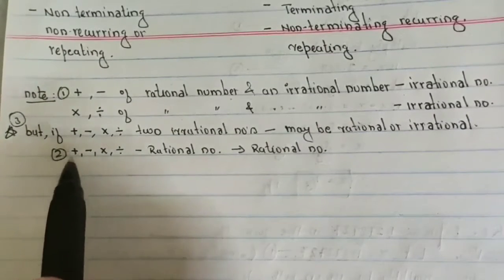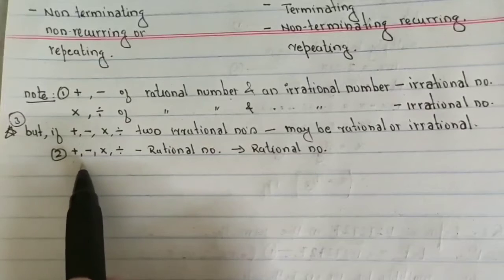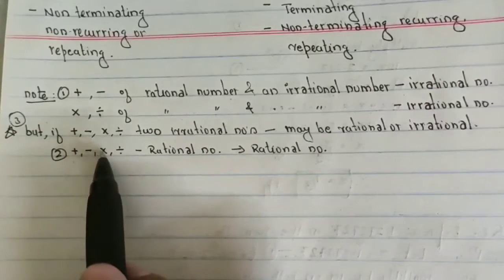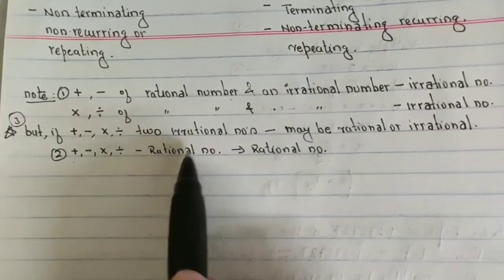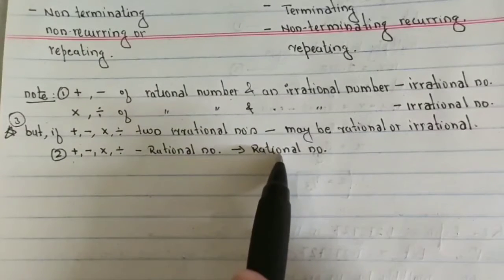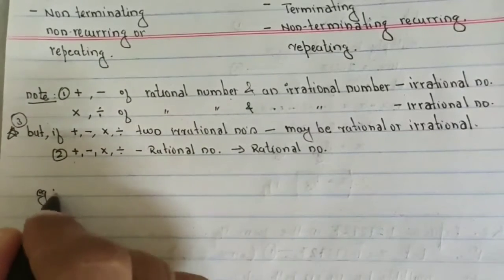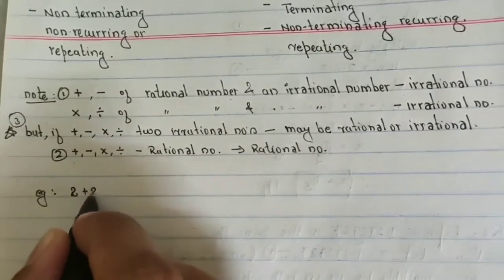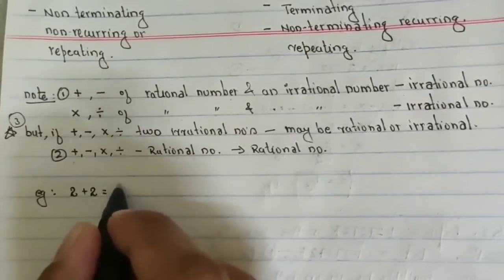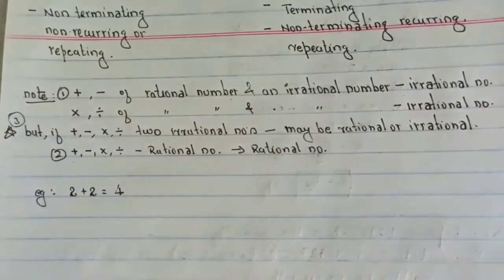Second, whenever you add, subtract, multiply, or divide a rational number with a rational number, you always get a rational number. For example, 2 plus 2 — both are rational numbers — you will get 4, which is also a rational number.